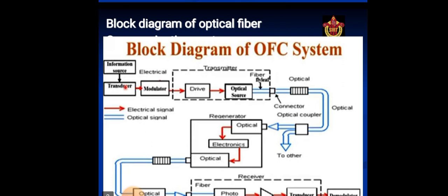Block Diagram of Optical Fibre System consists of information source, transducer, modulator, drive and optical sources. The channel is optical fibre, and the receiver side receives the optical signals, then photodiode is applied, then transducer, then demodulated signal.